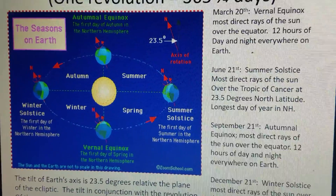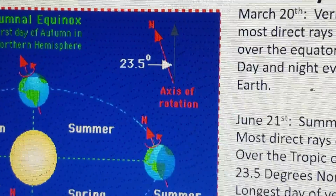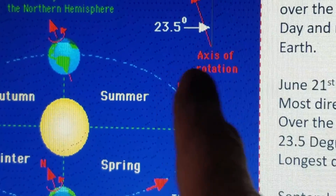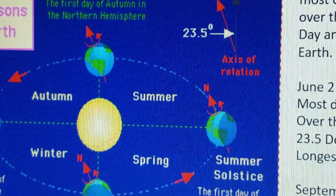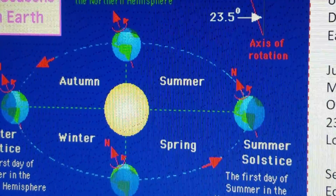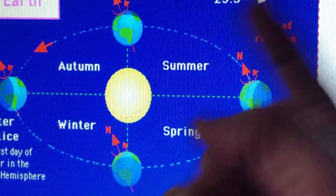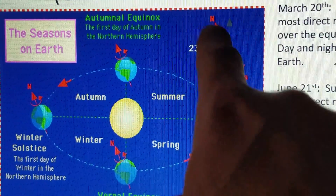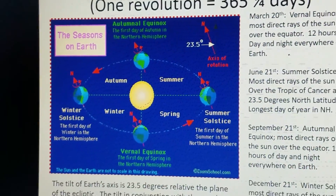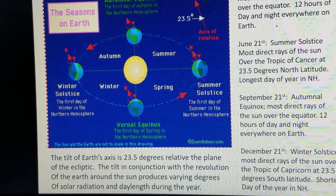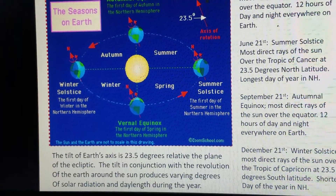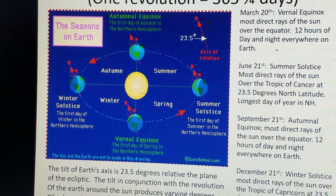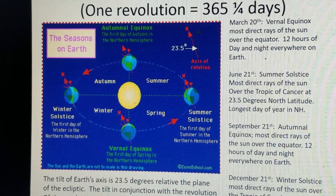I wanted to focus in on this right here. The plane of the ecliptic — the way the Earth revolves — is at a 23.5 degree angle. The axis of rotation is also at a 23.5 degree plane of the ecliptic. So it's not straight up and down; the Earth does not spin on a perfectly vertical axis. You notice how this axis is tilted at a 23.5 degree angle — that's a very important consideration. The tilt of Earth's axis, along with the revolution and the varying positions of the Earth around the Sun throughout the year, produce varying amounts of solar radiation and day lengths, all dependent on the latitude or location of a place on the Earth's surface.